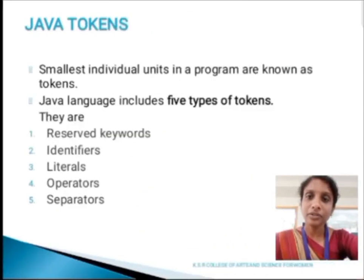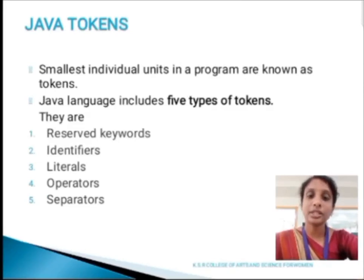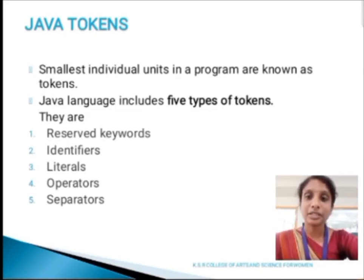Next, we are going to discuss about Java tokens. Tokens are nothing but the smallest individual unit in a program, known as tokens. Tokens are classified into five types. They are keywords, identifiers, literals, operators and separators.